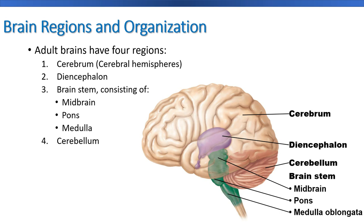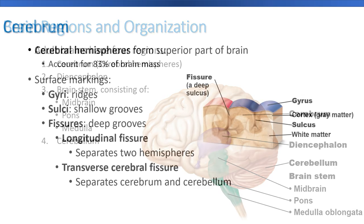So the four major parts of the brain are the cerebrum, the diencephalon, the brain stem, and the cerebellum. We've listed out the other structures in the brain stem. We did not list out the other structures of the diencephalon — we'll get to that in a little bit.